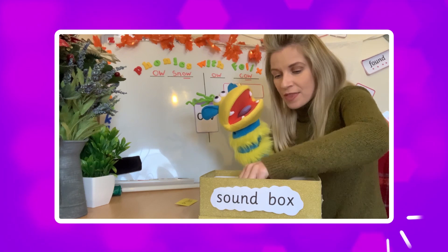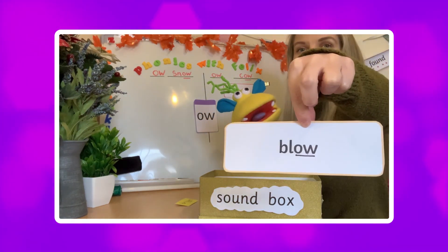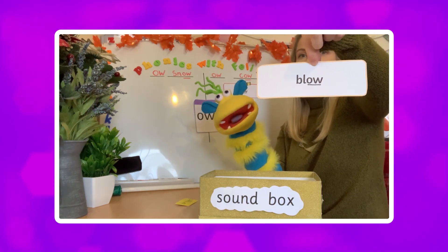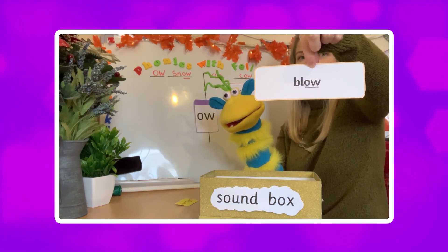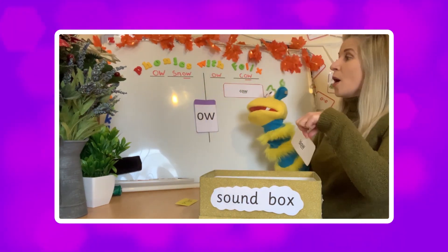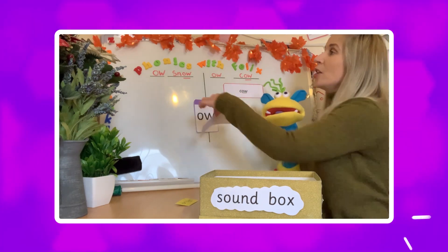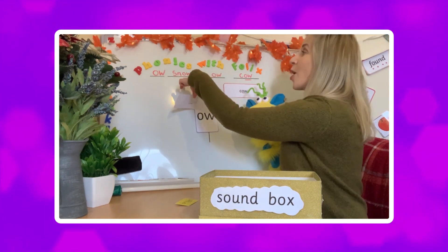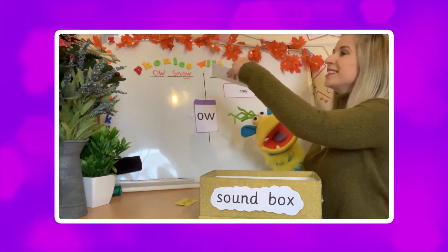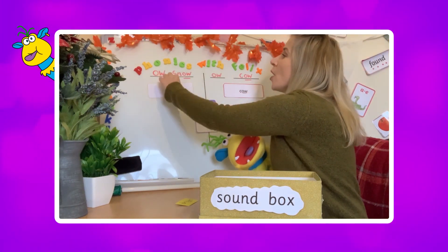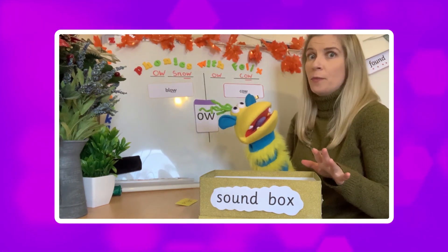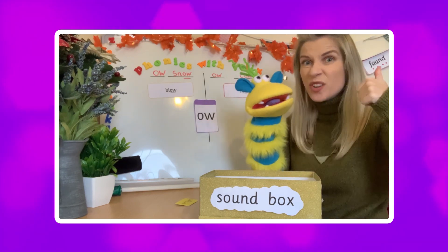What about this one? Going to hold it closer. Off you go, Felix — B-L-O. Blow. Well done! Which sound is it going to go on — 'O' as in snow or 'OW' as in cow? O as in snow. Well done — blow, O as in snow. Very complicated but we are doing great!